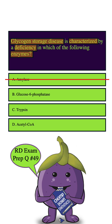How about B? Glucose 6-phosphatase is the enzyme responsible for releasing free glucose into the bloodstream. When this enzyme is deficient, glycogen cannot be properly converted to glucose, leading to low blood sugar levels. This enzyme deficiency is the absolute key feature of glycogen storage disease, so this is definitely the correct answer. But for good practice, we're going to go through the other answer choices as well.